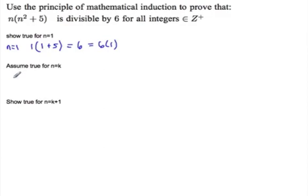Show true for n equals k. So this is saying that k times k squared plus 5 should equal some sort of 6a. Should be factored into 6 times a.